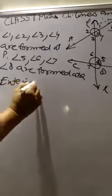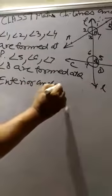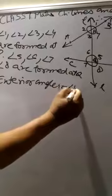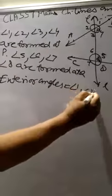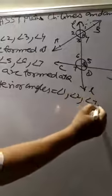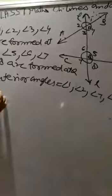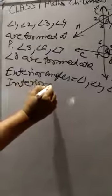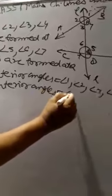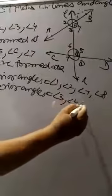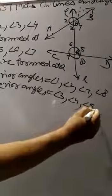Now exterior angles are angle 1, angle 2, angle 7, and angle 8. Interior angles are 3, 4, 5, and 6.